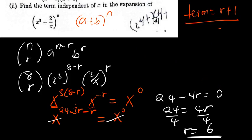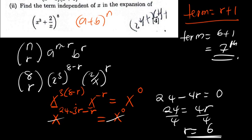Now r is 6. Using the formula, the term is given by r plus 1, so 6 plus 1 means the term independent of x is the seventh term. If the question asks you to find the term independent of x, the seventh term is the answer. But if they ask you to find the coefficient of the term independent of x, then you need to come back and plug in the values.